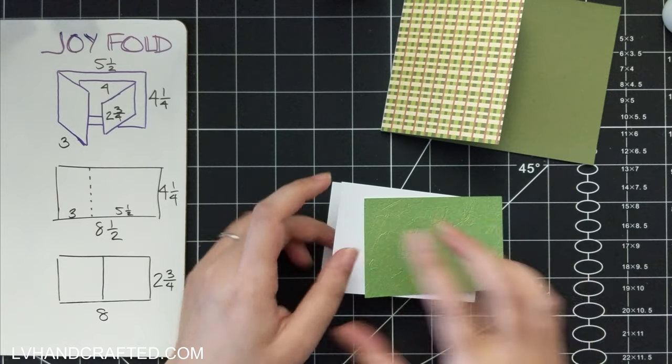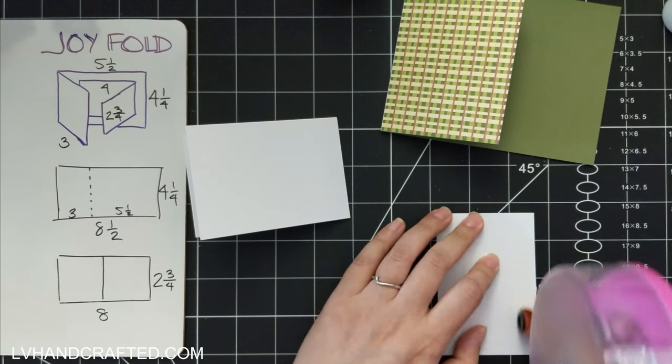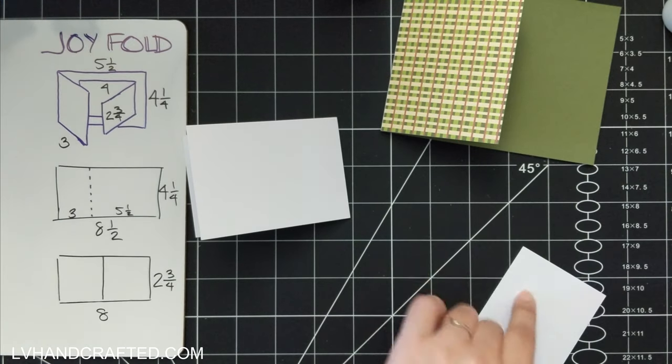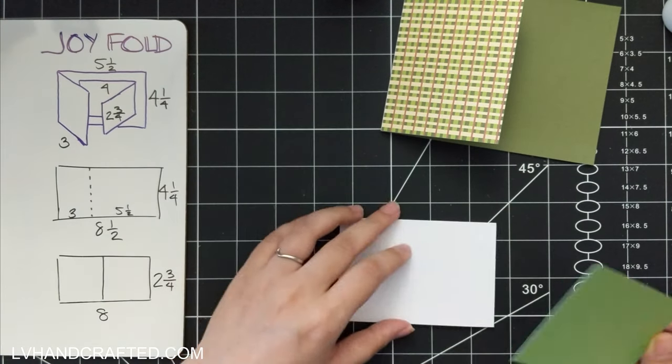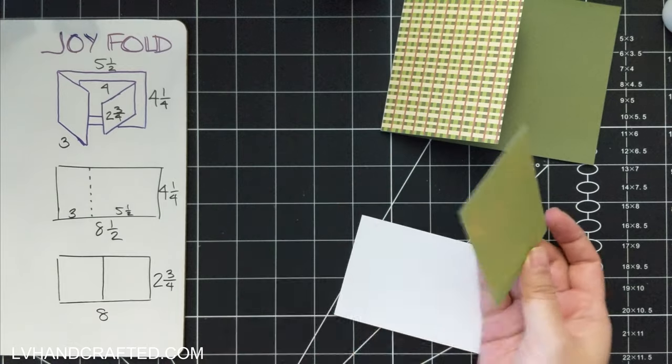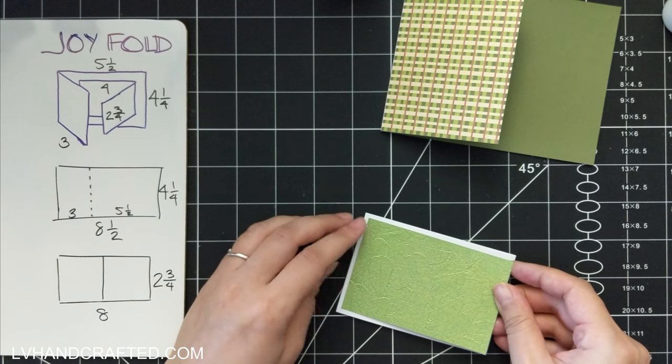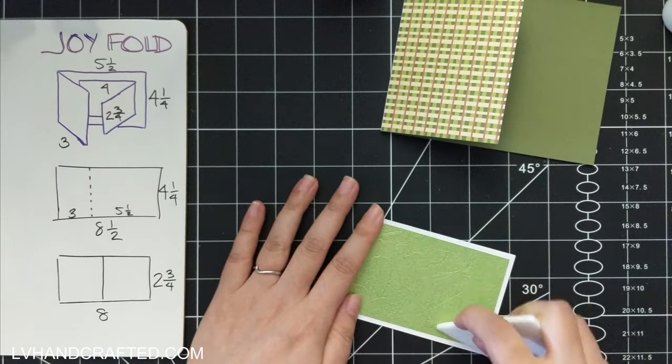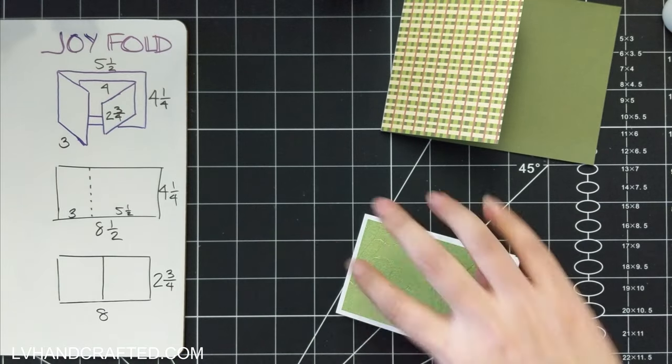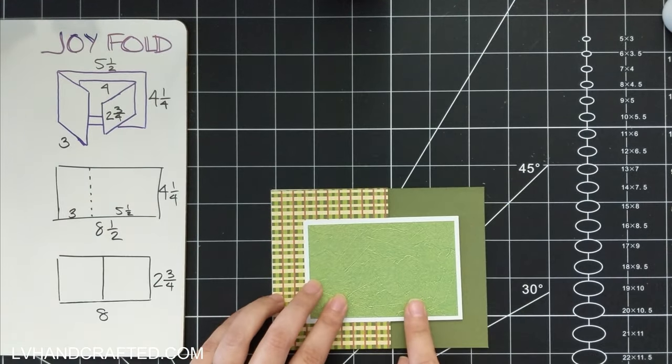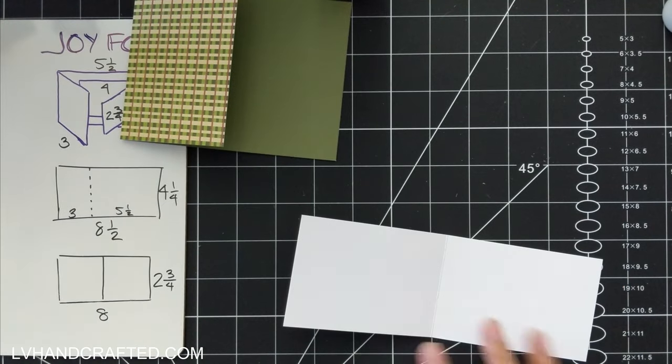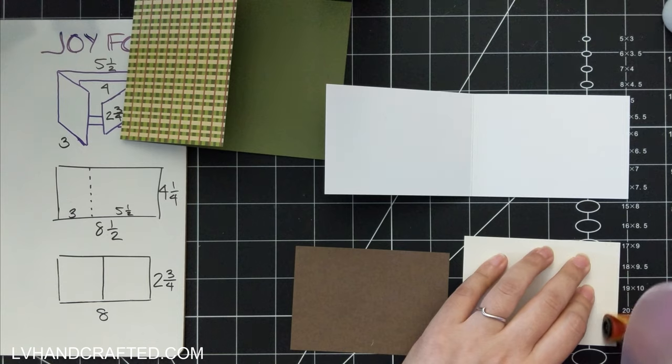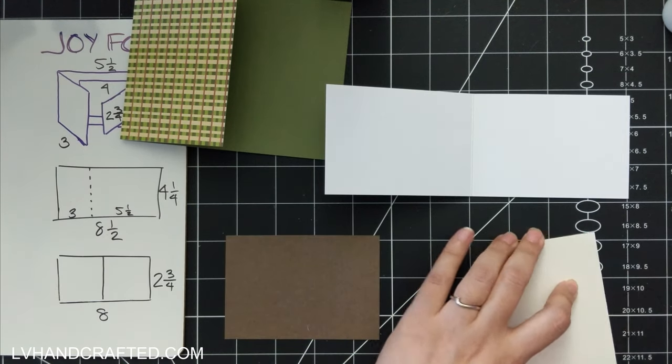And then on the little flap that folds over the front, that's 3 inches wide by 4¼ high. And so on the front and on the back of that I've lined it with patterned paper that's cut to pretty much that exact size. I'm not leaving any bit of the card base, the white card base showing.